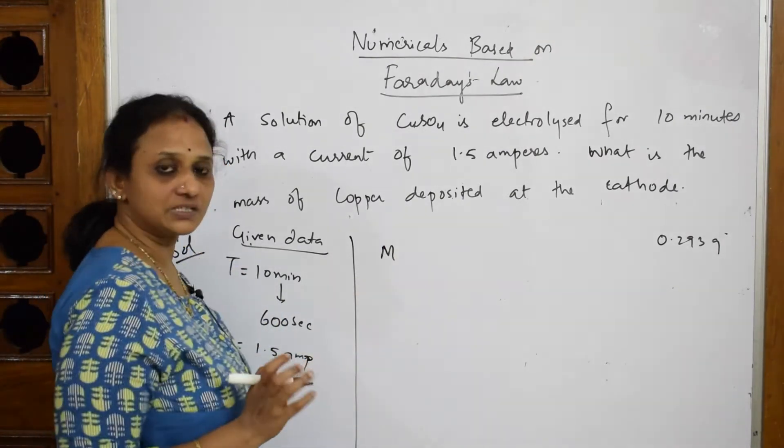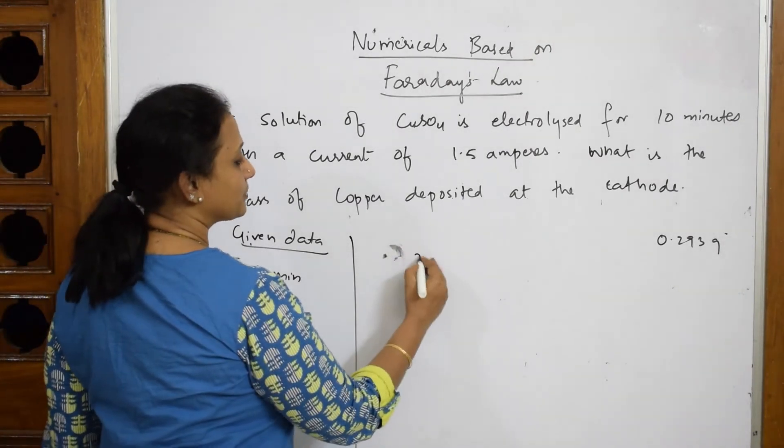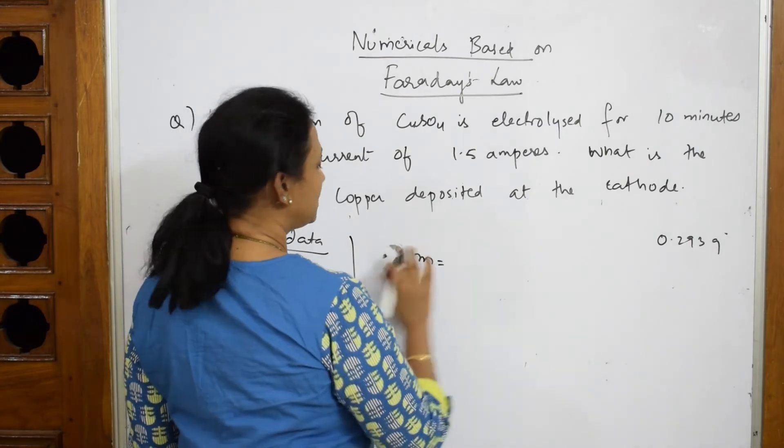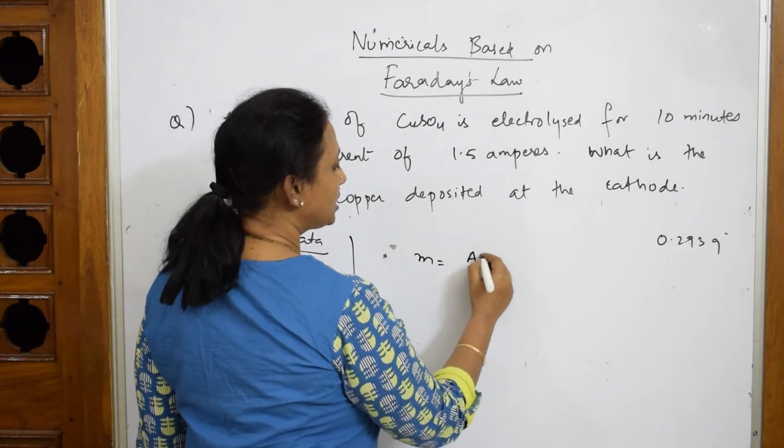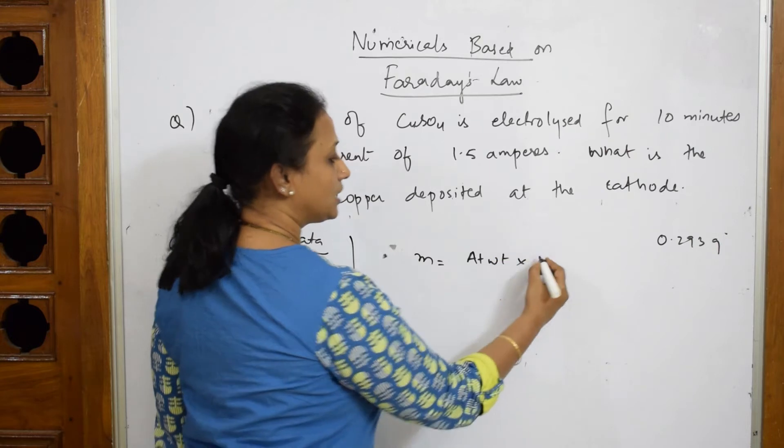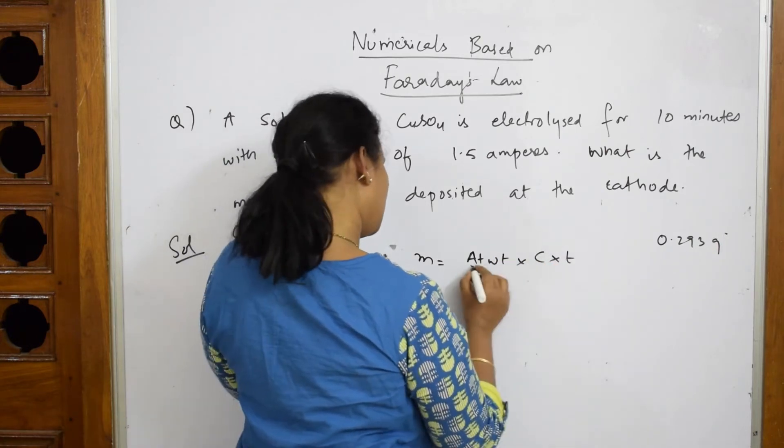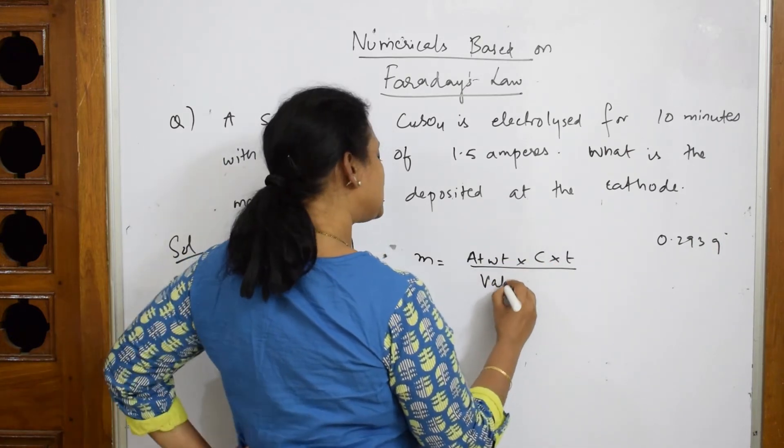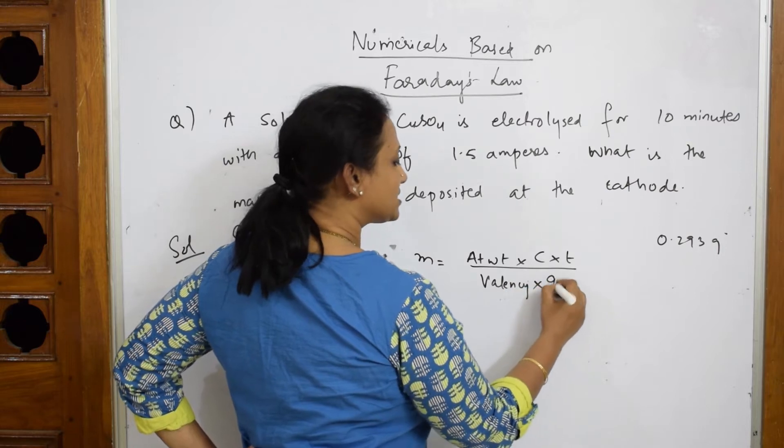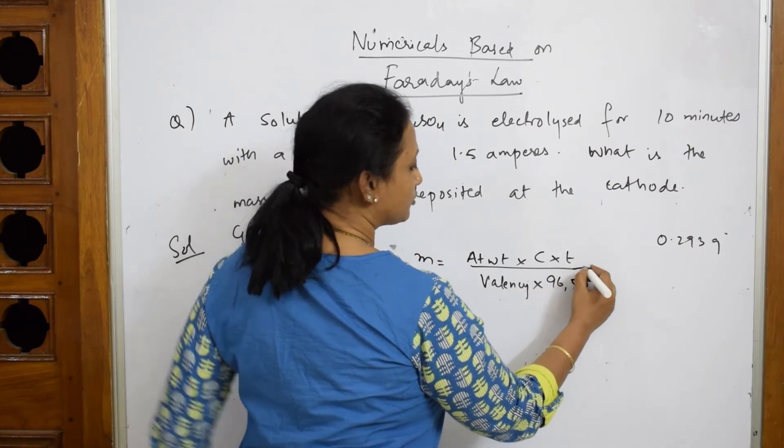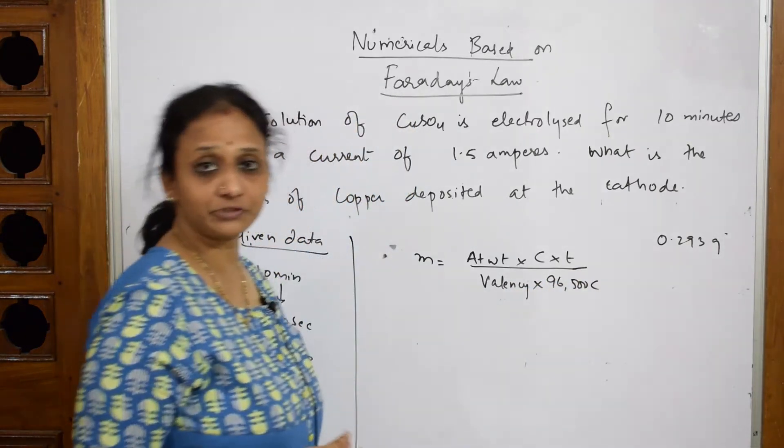So, mass according to first law, not capital M, smaller, is equal to, it's written by the formula, atomic weight into current into time by valency into 96,500. There's one formula like this. You can directly apply it for calibrating mass.